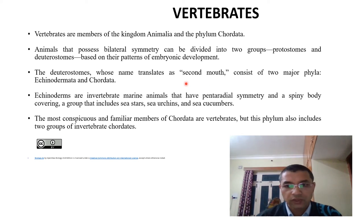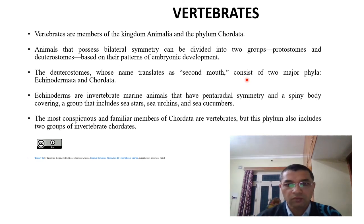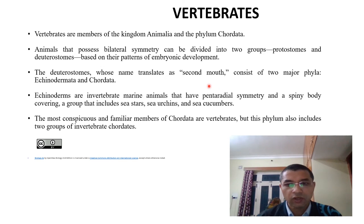On the basis of embryonic development, bilaterally symmetrical animals are subdivided into protostomes and deuterostomes. If the blastopore changes into the mouth first, then the animals are categorized as protostomes. But whenever the blastopore changes into the anus, this is considered deuterostomes. Echinodermates onward, all the chordates are considered deuterostomes.